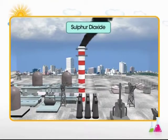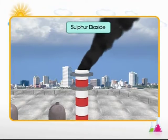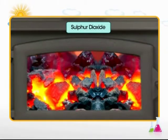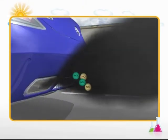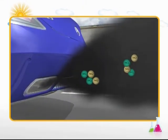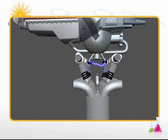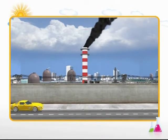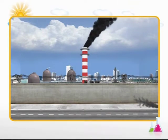Sulfur dioxide is an odourless gas at low concentration. It is produced as a result of burning of sulfur-containing fossil fuels like crude oil or coal. Oxides of nitrogen, mainly nitric oxide and nitrogen dioxide, are produced as a result of incomplete combustion of fossil fuels like coal and petrol. These toxic gases are released into the air mainly from automobile exhaust and industrial emissions.